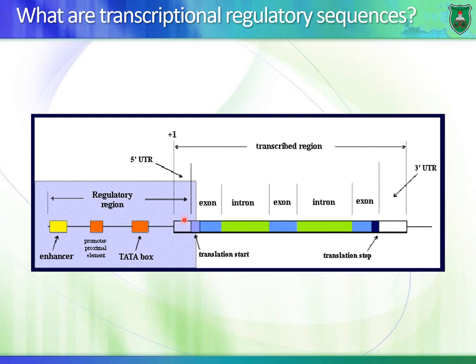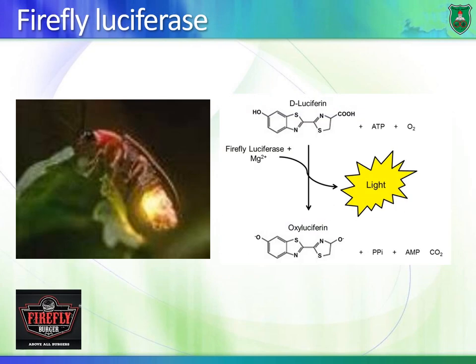Let's say we have a gene and we want to know what regions are important for the transcription of this gene. We use recombinant DNA technology and take advantage of an enzyme known as firefly luciferase. This is the firefly — an insect that has a tail that fluoresces.